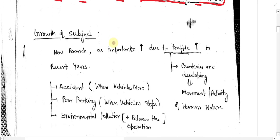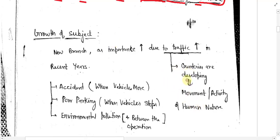Now, where is the subject important? Traffic engineering is used for developing countries. Why? Because in developing countries, activity is more — activities are more as compared to developed countries. And it is seen that traffic is increasing in developing countries.